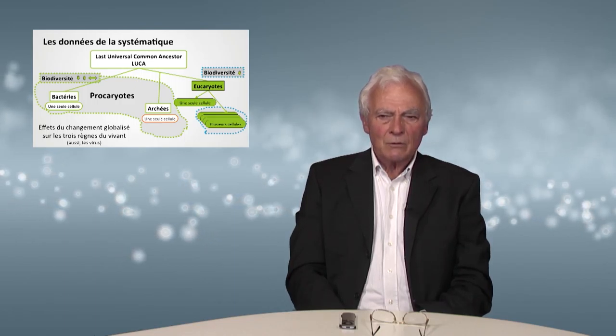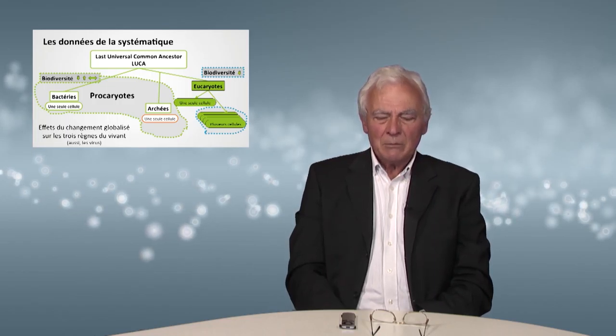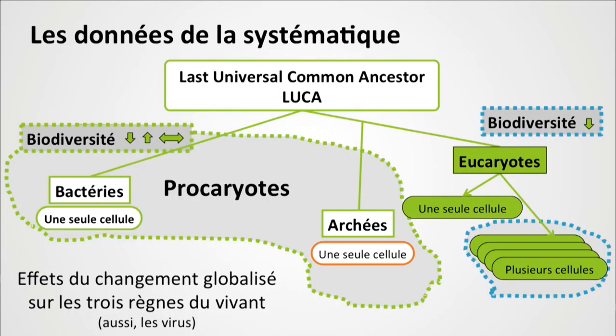They all have a common origin called Luca — the Last Universal Common Ancestor, the common ancestor to all living species. There are three kingdoms: bacteria, archaea, and eukaryotes. Bacteria and archaea are prokaryotes, meaning they have no nuclear membrane, whereas eukaryotes have a nuclear membrane. Bear in mind that this classification doesn't mean that we have on one hand monocellular living beings and on the other hand multicellular living beings, because there are monocellular single-celled eukaryotes.